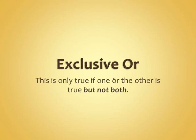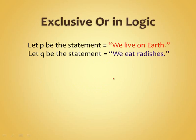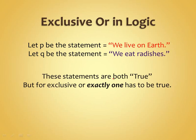This is something kind of unique to programming: the exclusive OR, which is only true if one or the other is true, but not both. So if both are true, it comes back false. There's not actually a special symbol for it — it's just XOR that you would see in MATLAB. So 'we live on Earth XOR we eat radishes' — both are true, so exclusive OR returns false. 'We live on Earth XOR we eat plutonium' — exactly one is true, so exclusive OR returns true. 'We live on Mars XOR we eat plutonium' — both false, so exclusive OR returns false.